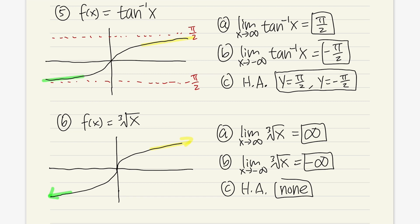You can see that inverse tangent and the cube root function look kind of similar, but you have to know the technical detail. Do not just look at your graphing calculator and say it looks like it should have a horizontal asymptote — it does not.